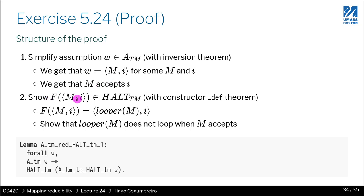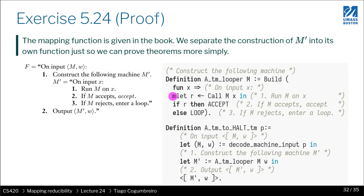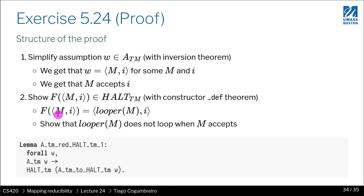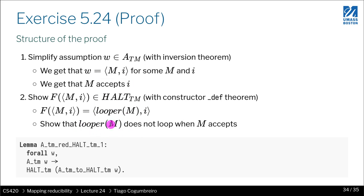From ATM membership of W, we can derive that W must be a pair (M, I), and if W belongs to ATM, we know that machine M accepted input I. What we need to show is that f(M, I) belongs to Halt-TM — specifically, that calling f on (M, I) returns looper of (M, I), where looper is M prime. The last thing we need to show is that looper of M does not loop when M accepts — because it has to halt. If it is halted, we know the machine accepted, and when the machine accepts, then looper also accepts.